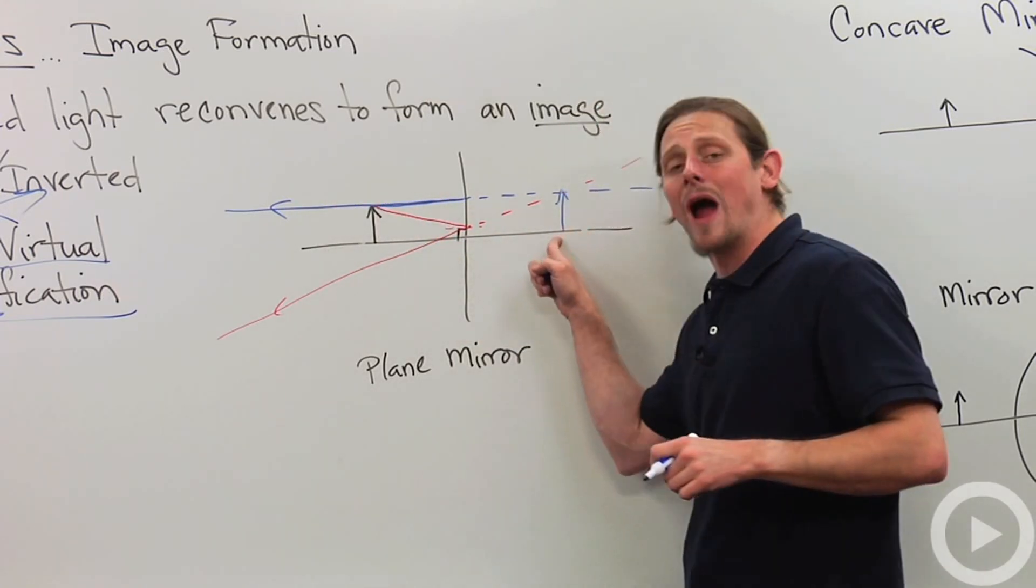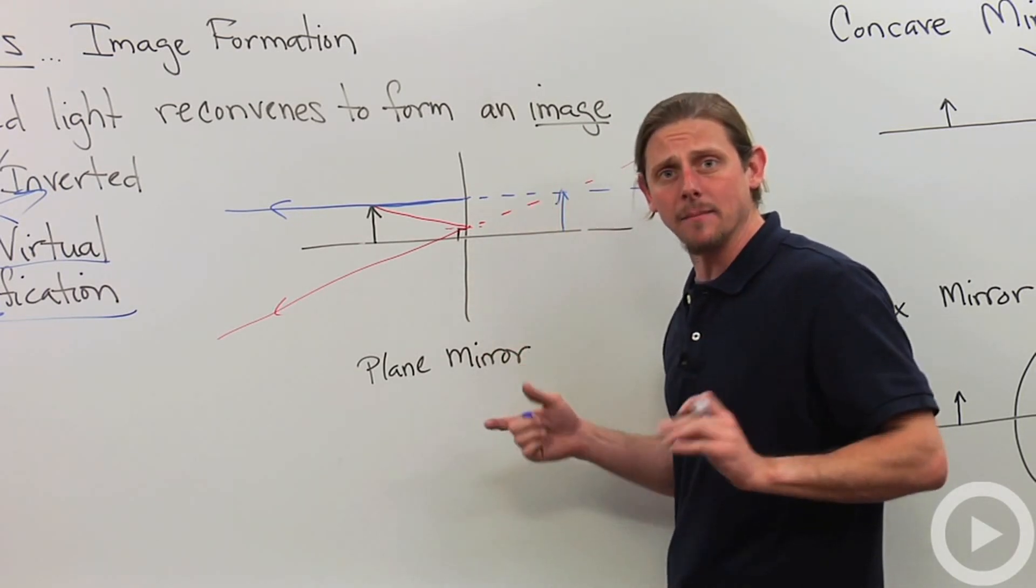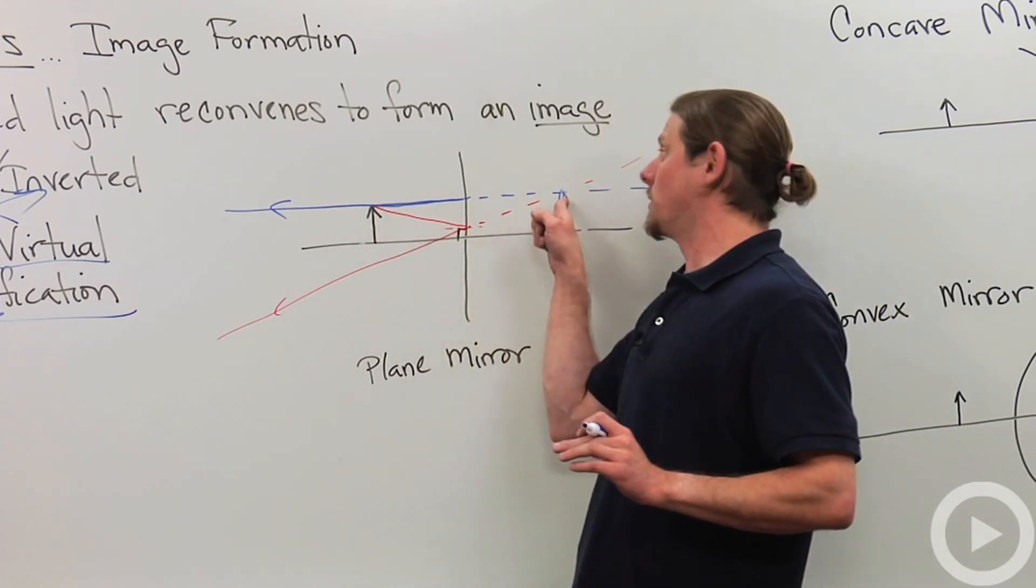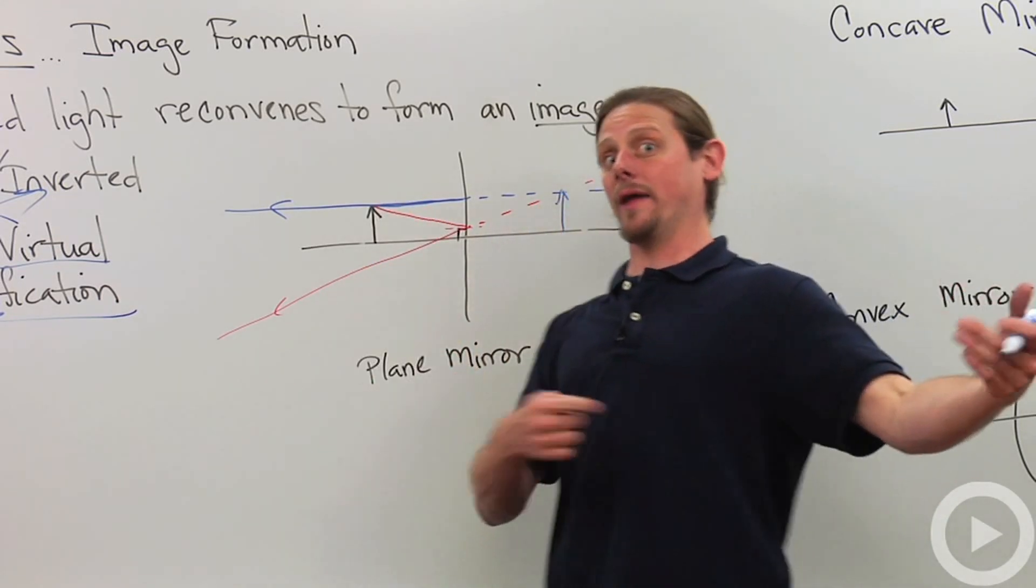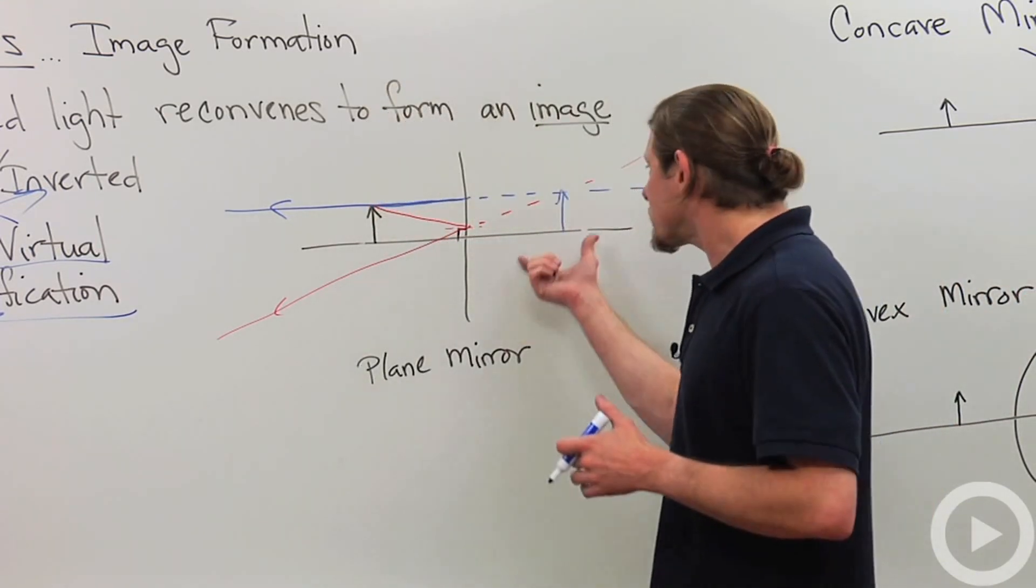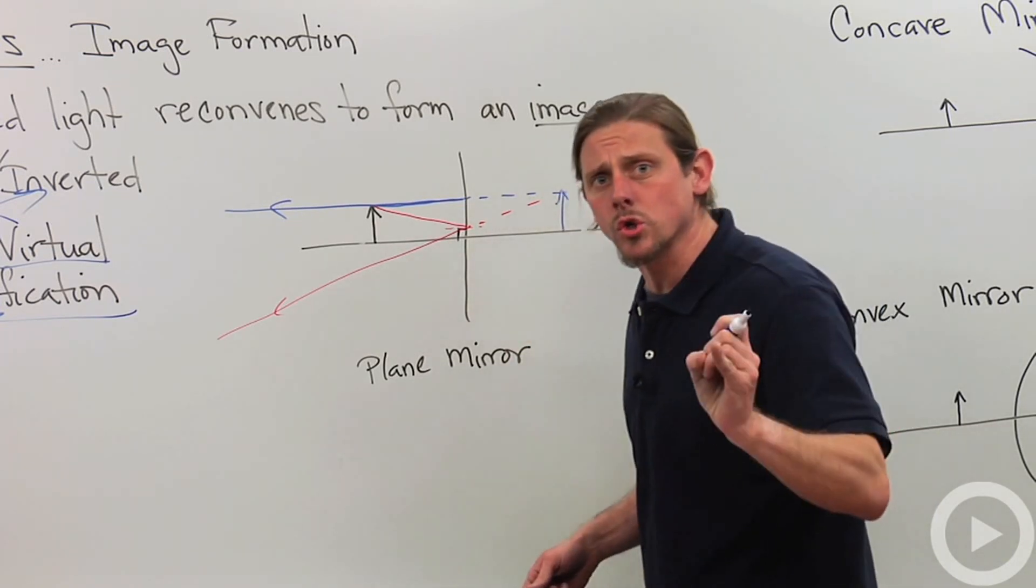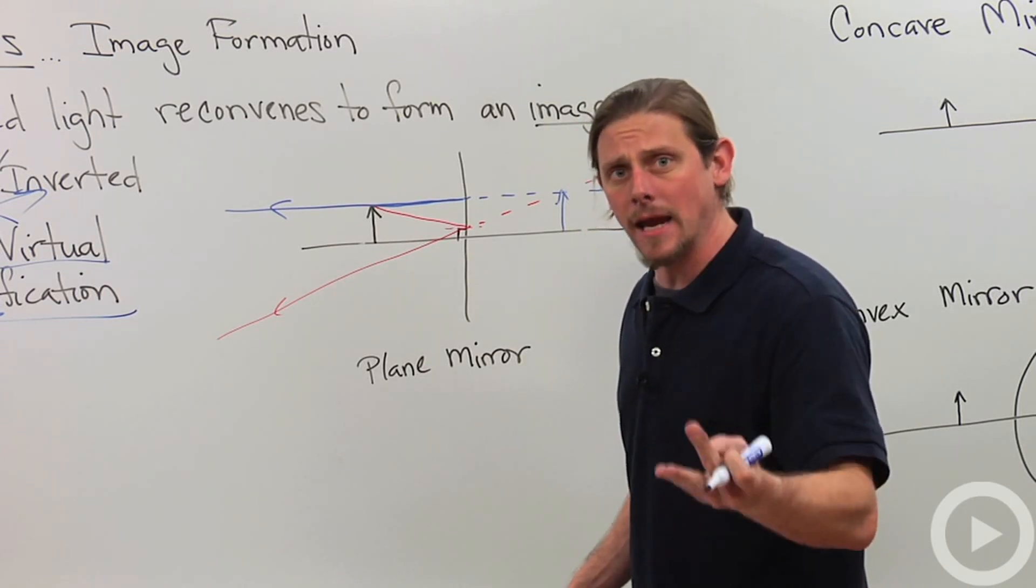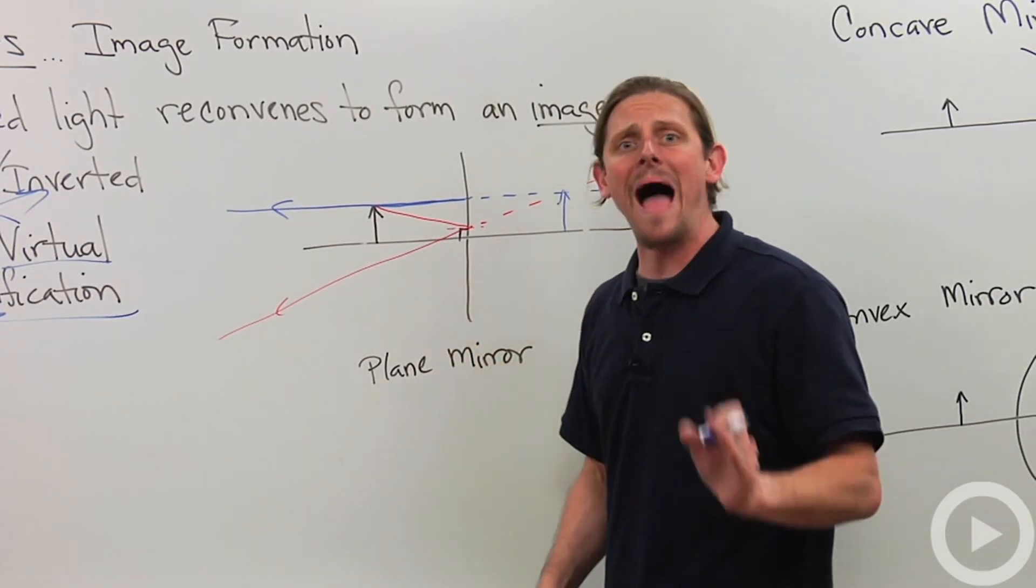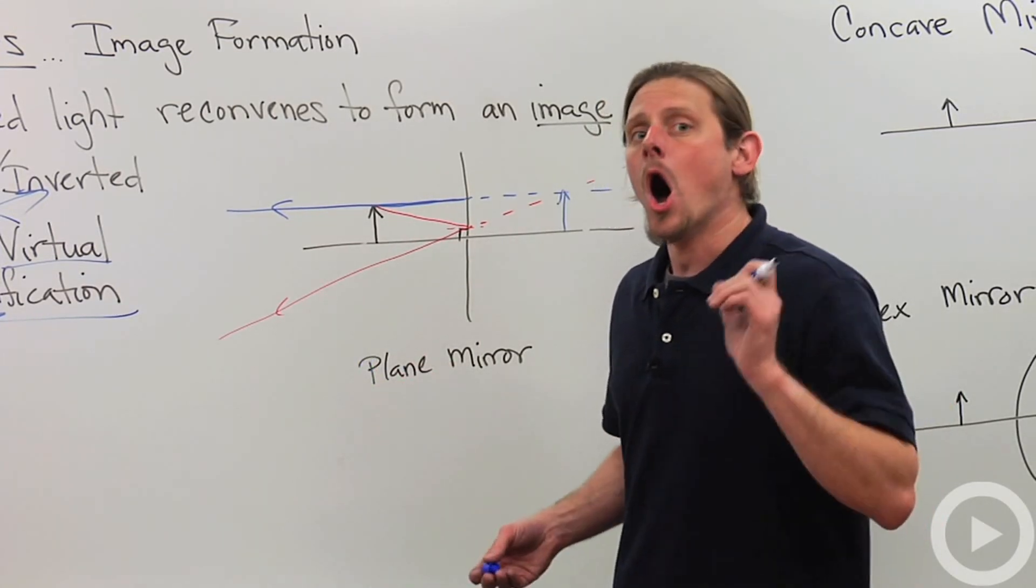Notice that the image is erect, it's right side up, and it's the same size and same distance away. So we have a virtual image because the light never actually was here. If I go and look behind the mirror, I'm not going to see anything there. The idea is no light actually came here. It's a virtual erect image, same distance away from the mirror as the object with a magnification of one, which means it's not magnified.